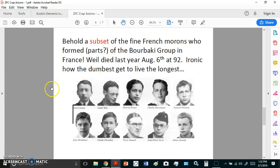Now, here is a subset of all the fine morons who formed the Bourbaki group in France. Weil died last year, August the 6th, at 92. Isn't it ironic how the dumbest get to live the longest?